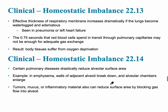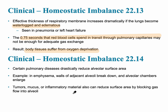The effective thickness of the respiratory membrane can increase significantly when the lungs become waterlogged or edematous — extra fluid increases membrane thickness. Normally, blood picks up oxygen over 0.75 seconds as it moves from pulmonary arteries to pulmonary veins. If there's a homeostatic imbalance, body tissue suffers from oxygen deprivation. Certain pulmonary diseases reduce the surface area: in emphysema, the walls of the alveoli break down, reducing surface area. Tumors, mucus, and inflammatory materials can also block gas flow from actually getting into the alveoli.